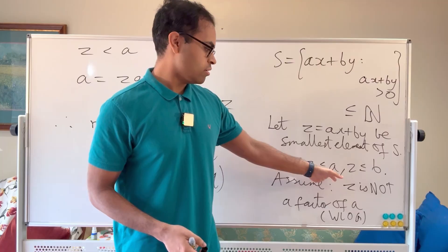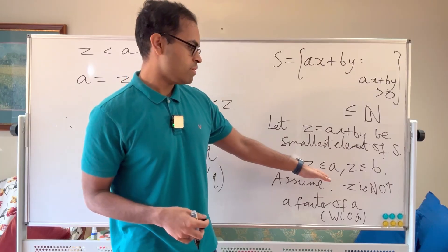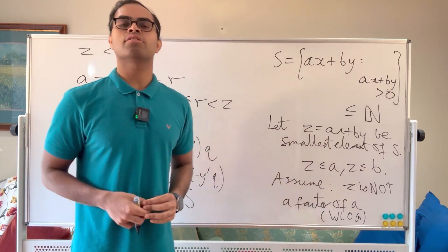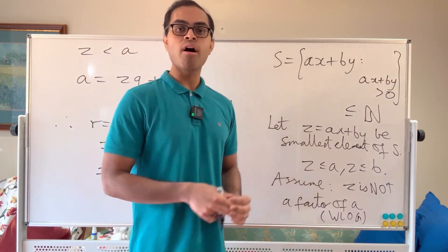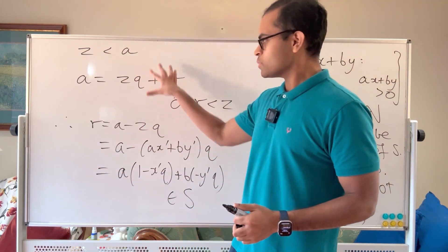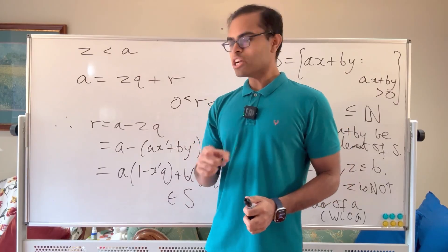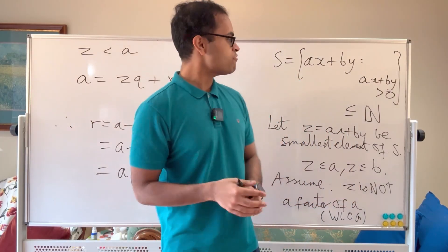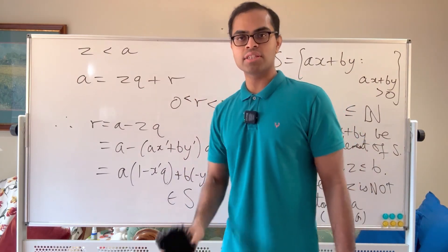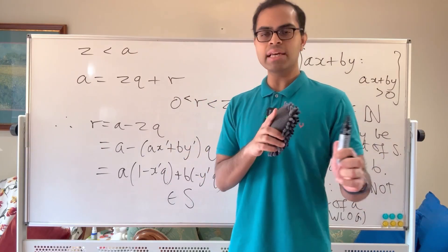The contradiction shows that Z cannot fail to divide both a and b. So Z is a factor of both a and b, meaning Z is less than or equal to the greatest common divisor. And since every element of S is a multiple of d, Z must equal exactly d. That completes the proof. The Euclidean algorithm also gives us a constructive method to actually find x and y — I'll show that now with a concrete example.